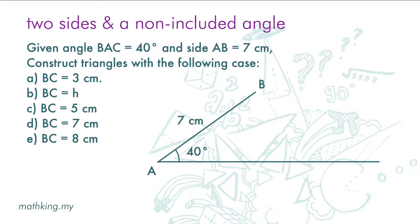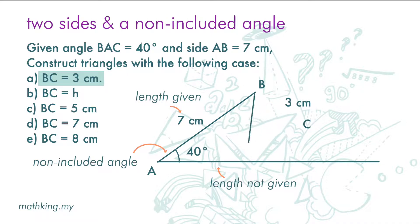Now, if BC is 3 cm, there can be no triangle.